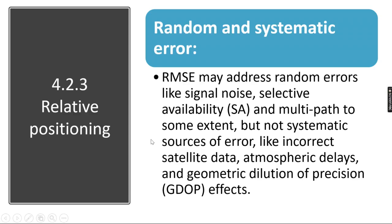If we want to find out the relative position of any object on the surface of Earth, we have different techniques. Before discussing the techniques, we will study random and systematic errors. Root mean square error may address random errors like signal noise, selective availability, and multipath to some extent. We can find out the average of all these errors using the root mean square error method.